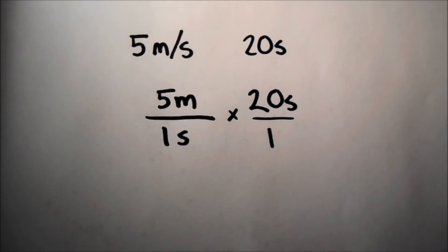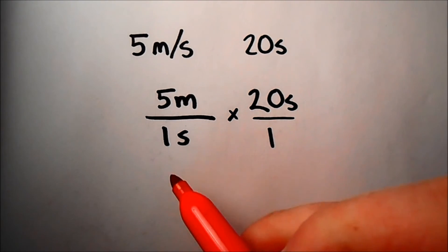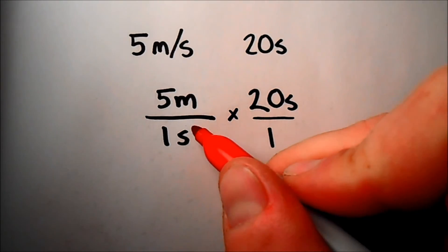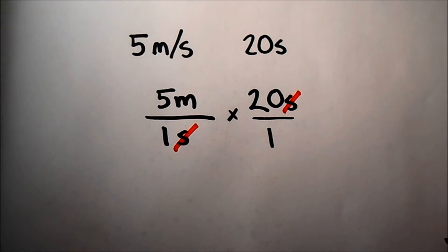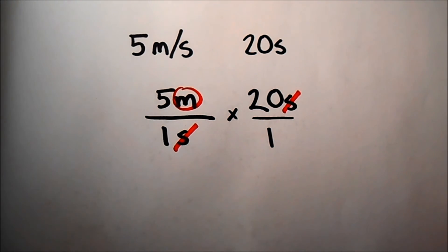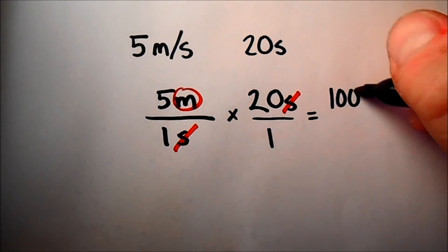Now if you're looking closely, you might see that seconds is on the numerator position in this part of the problem, and seconds is in the denominator position at this part of the problem. These seconds then are going to cancel. Not the numbers with them, the numbers still are going to be part of this problem. But seconds divided by seconds will cancel out. I'm going to be left with just meters as my only unit. So this winds up being 5 times 20, Jebediah went 100 meters.